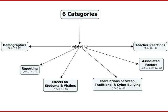The analysis of the studies revealed six categories related to cyberbullying and harassment. The categories that emerged from the analysis were demographics, reporting, effects on students and victims, correlations between traditional and cyberbullying, associated factors, and teacher reactions.